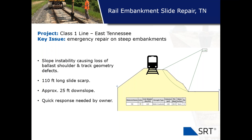A case history demonstrating SRT systems for rail applications involved a Class One line in eastern Tennessee — an emergency repair on a steep embankment where slope instability was causing loss of the ballast shoulder and track geometry defects. This was approximately a 110-foot long scarp affecting the rail line, with sliding soils extending down slope about 25 feet in a remote area affecting rail operations. The owner needed a very quick response from the GeoPeer team.